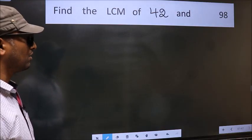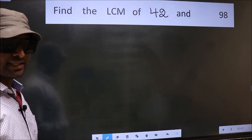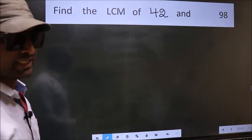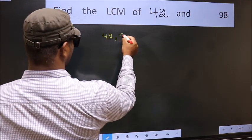Find the LCM of 42 and 98. To find the LCM, first we should frame it in this way: 42, 98.